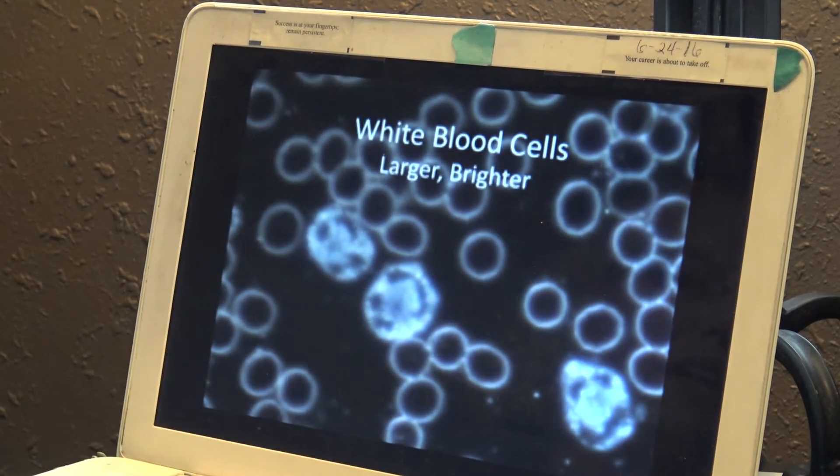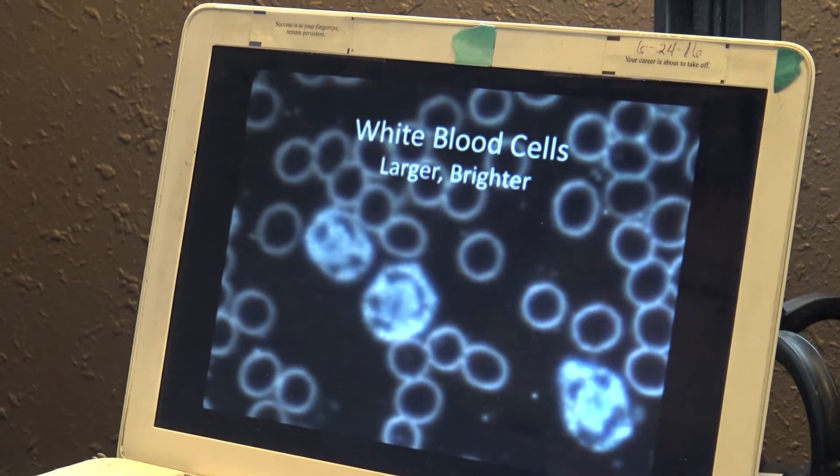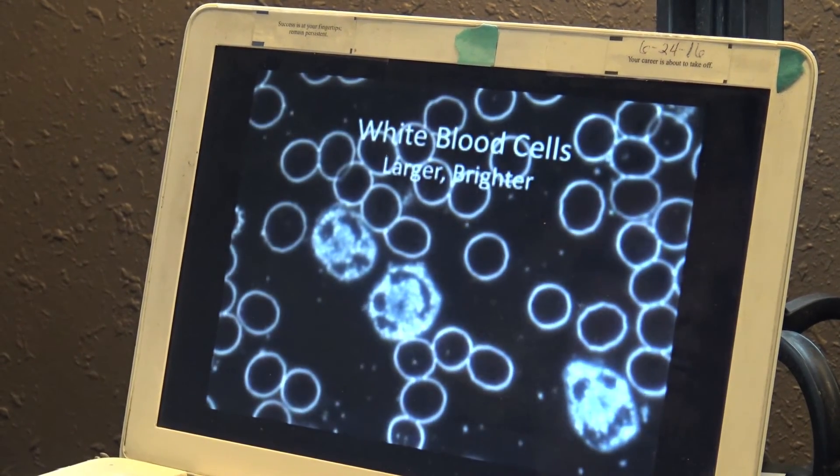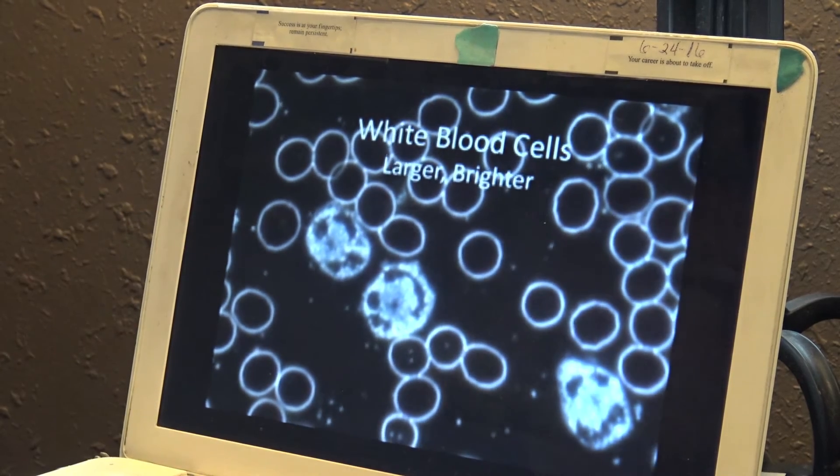It's four times the size, about four times the size of what the red blood cells are. So the white blood cells, which is the immune system, get stronger. They get larger and brighter in color and more active.